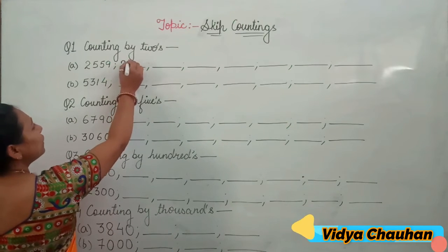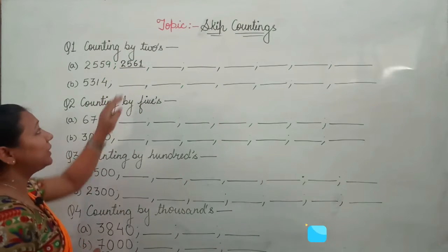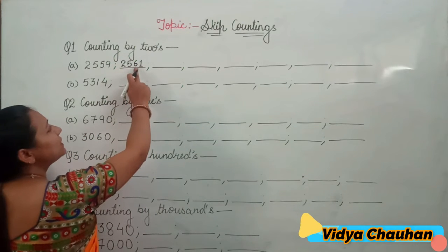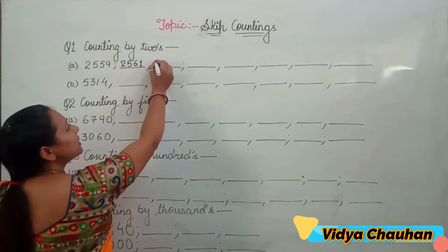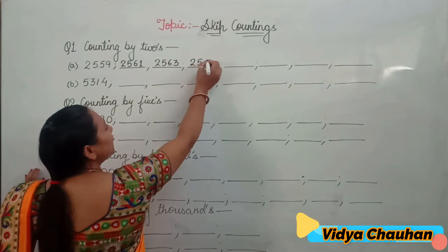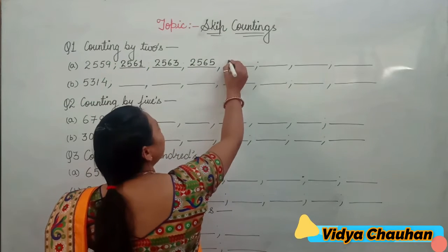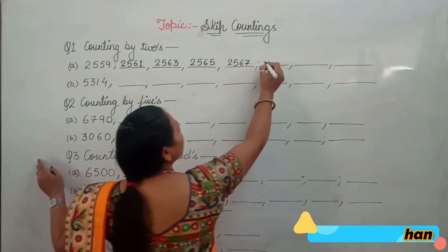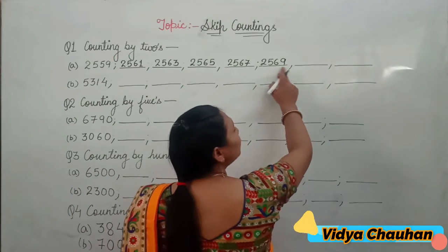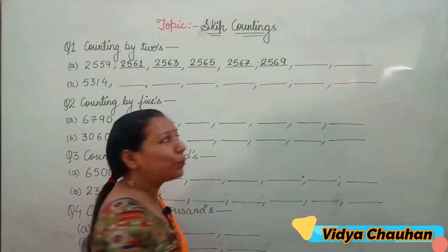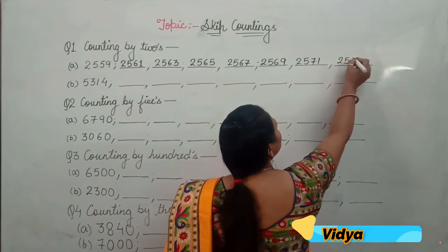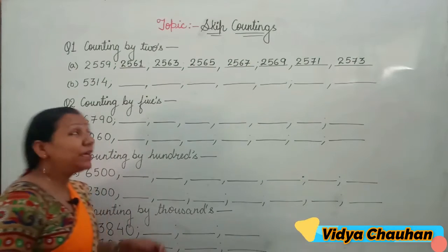So the next number is two thousand five hundred sixty-one. Then adding two to sixty-one gives sixty-three, so the next number is two thousand five hundred sixty-three. Then two thousand five hundred sixty-five, two thousand five hundred sixty-seven, two thousand five hundred sixty-nine. Adding two to sixty-nine gives seventy-one, so the next number is 2571, and the last is 2573.